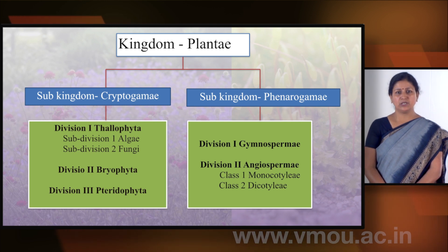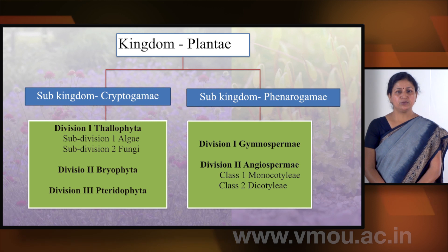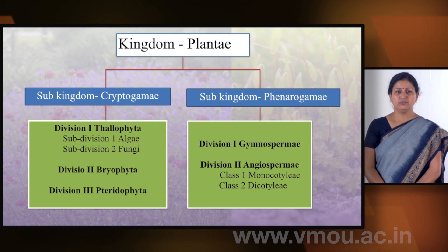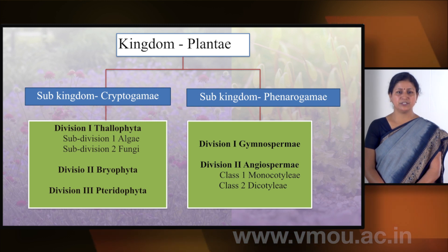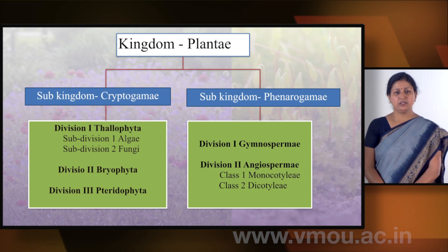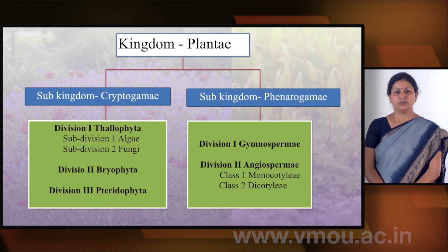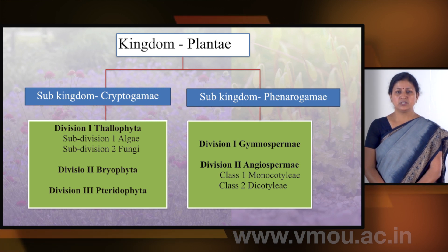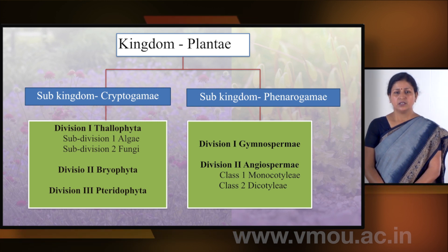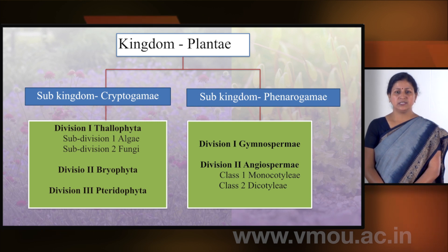Cryptogamy and Phanerogamy are two sub-kingdoms. Cryptogamy sub-kingdom has three divisions: Thallophyta, Bryophyta, and Pteridophyta. Thallophyta division has two sub-divisions: algae and fungi. Sub-kingdom Phanerogamy has two divisions: the first is Gymnosperms and the second is Angiosperms. Angiosperms are divided into two classes: Monocotyledon and Dicotyledon.